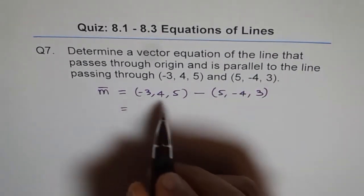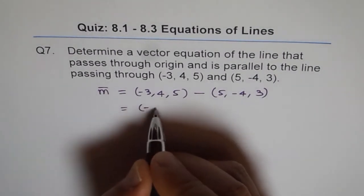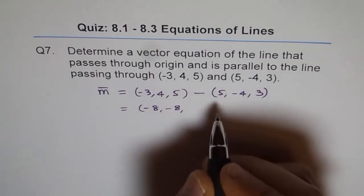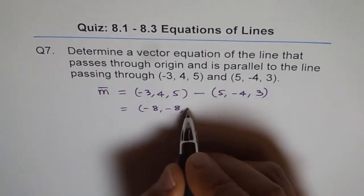And then, so this minus this is -8, 4 minus -4 is -8, and 5 minus 3 is 2.